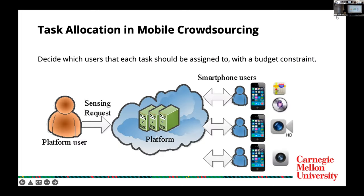A crowdsourcing platform is provided to connect task requesters with mobile workers. Suppose a task requester needs help from mobile workers to collect data — the task requester can post the task on the platform. Then the platform chooses available workers to finish these tasks and provides the task requester with the desired output. However, it is not affordable for the task requester to assign a single task to all available workers, so the platform needs to choose which workers can provide the highest task quality.